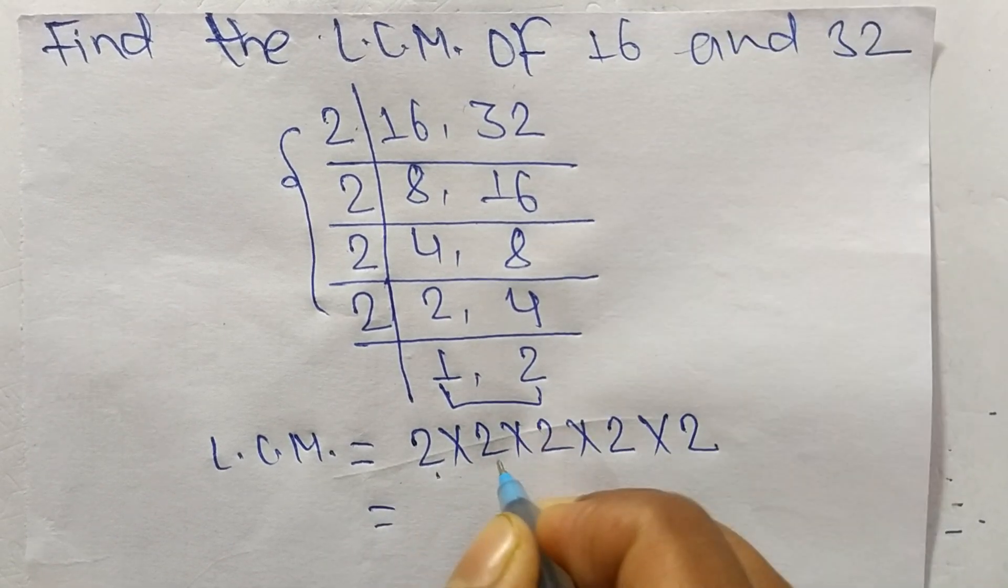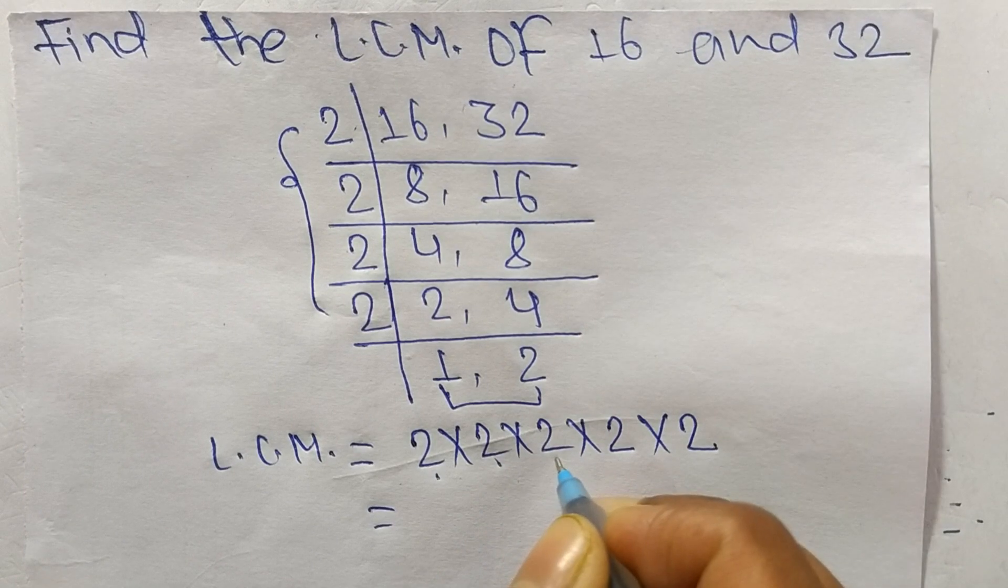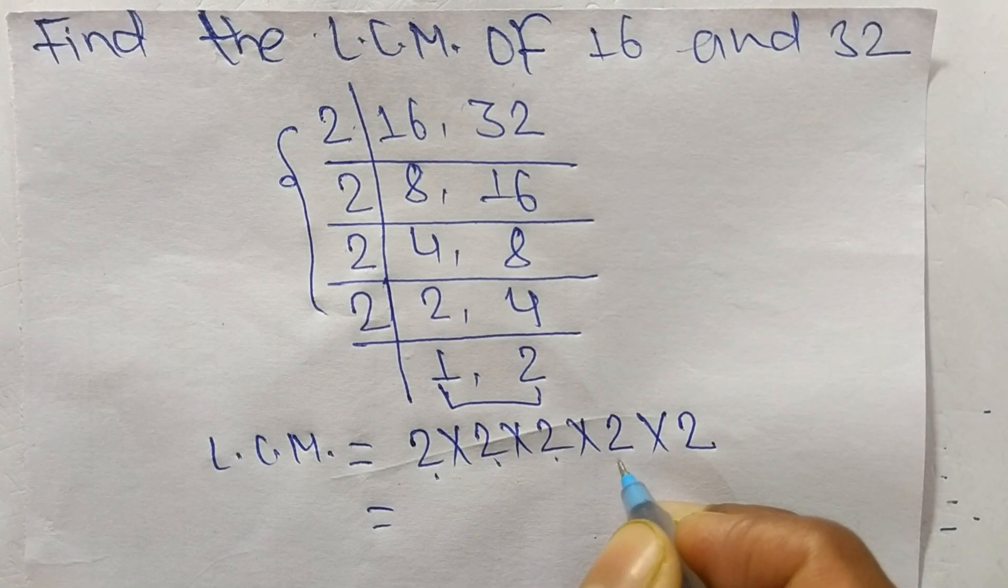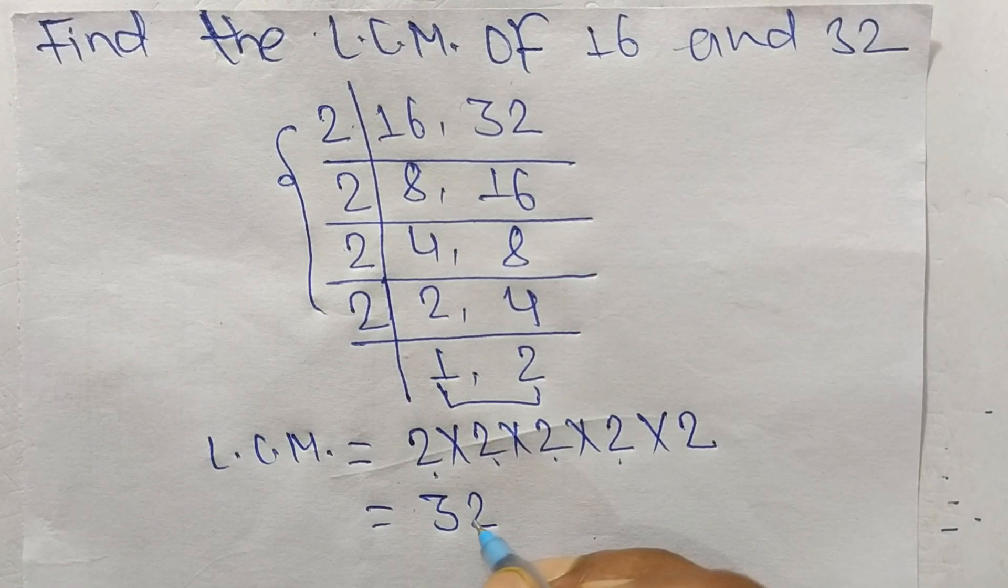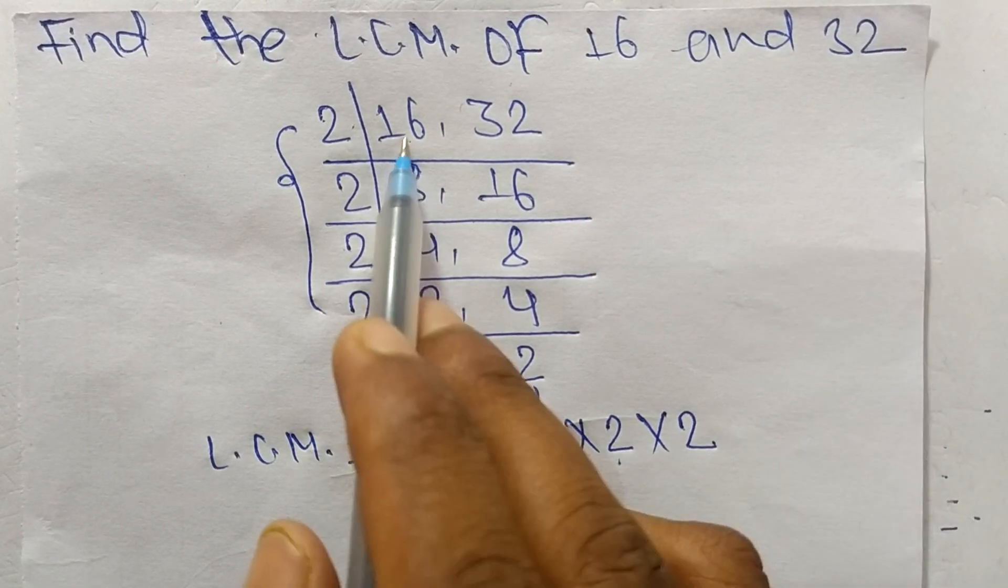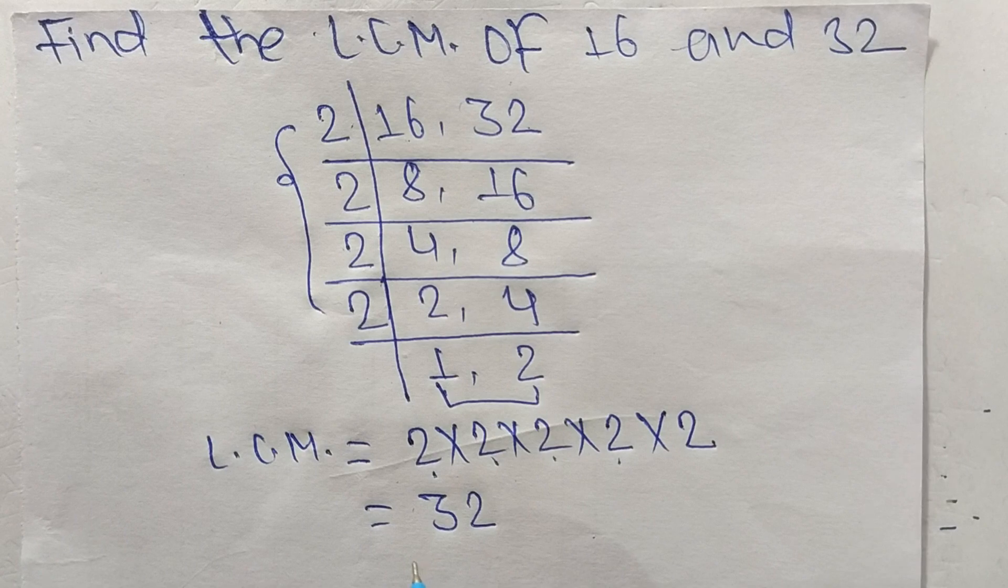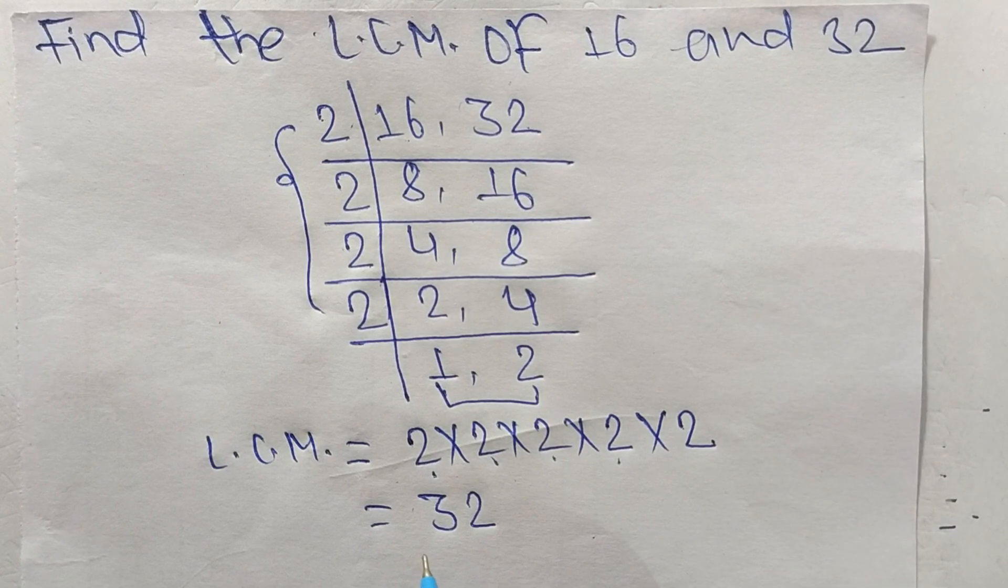2 times 2 means 4, 4 times 2 is 8, 8 times 2 is 16, 16 times 2 means 32. So 32 is the LCM of 16 and 32. This is all for today, thanks for watching.